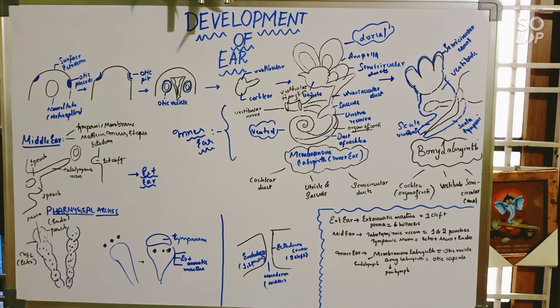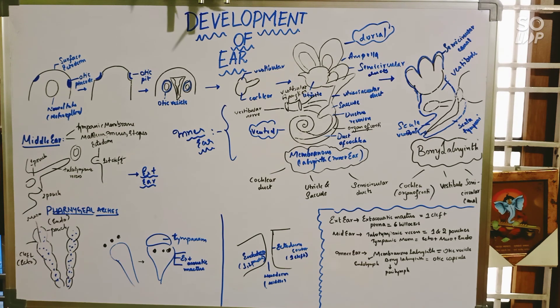Next, we are going to internal ear anomalies. The membranous labyrinth and bony labyrinth may be affected. The membranous labyrinth may be underdeveloped, and the cochlea alone may be affected, leading to congenital deafness.